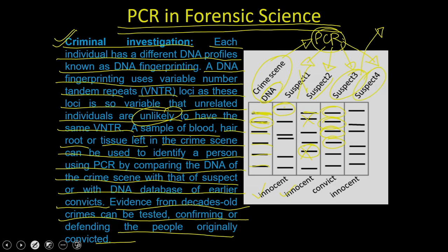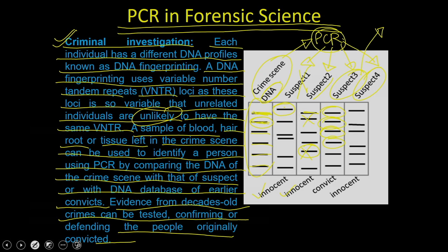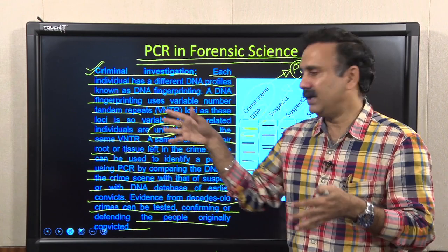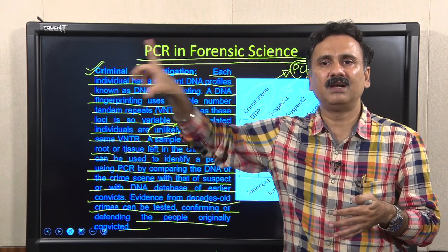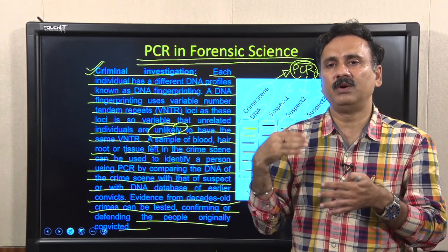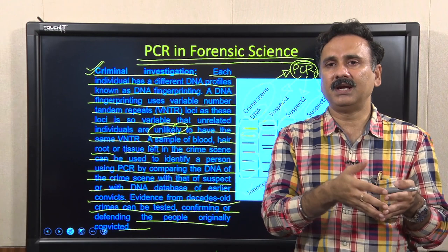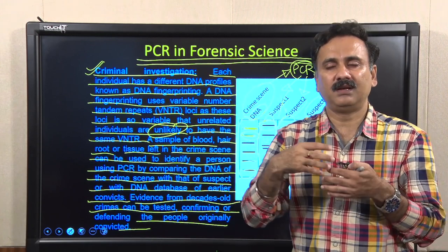Police also maintain databases of DNA patterns from convicted criminals, generating a DNA library. When a crime scene DNA pattern is obtained, it can be matched against this database to identify potential suspects. Evidence from decade-old crimes can also be tested, confirming or exonerating people originally convicted. This allows pinpointed identification and further investigation to confirm involvement.